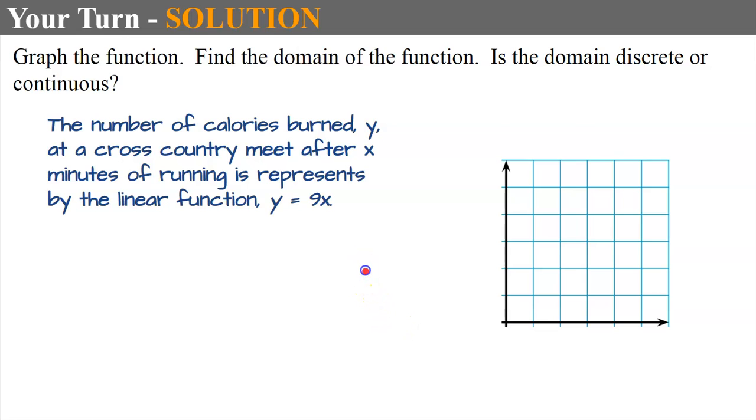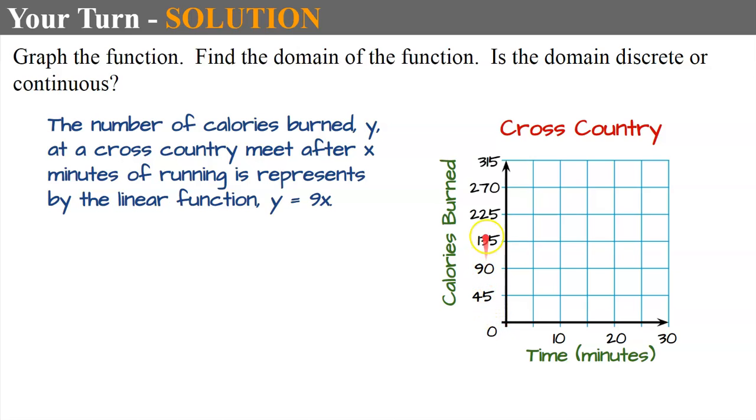Welcome back. Let's do this together. So we have, I'm always going to title a real world graph. It's cross country. And y represents the calories that are burned. My domain is representing the number of minutes that I've been running. I'm going to use intervals of 0, 10, 20, and 30. And calories burned, I'm going to do intervals of 45. So I collected some data ahead of time, and those are my intervals. If yours are different, that's okay.